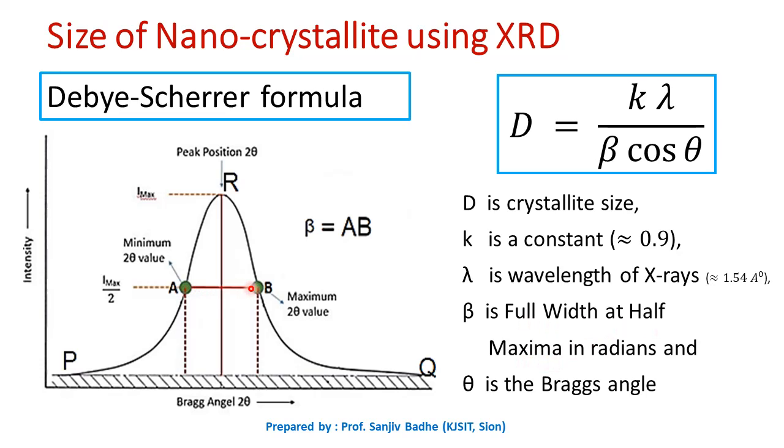can be obtained by drawing a line AB at intensity Imax upon 2, where Imax is highest intensity. Now beta can be found by subtracting minimum value of 2 theta at point A from maximum value of 2 theta at point B.